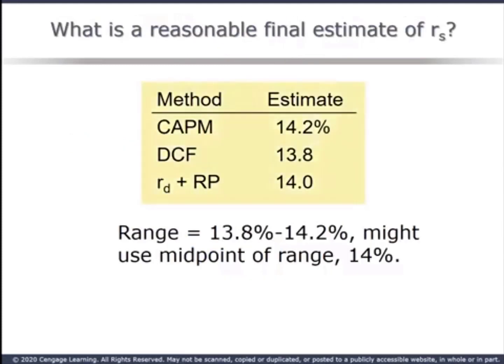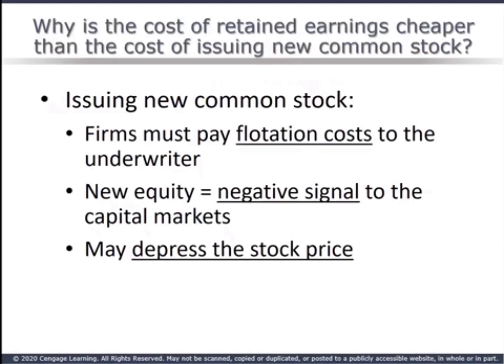So here are our three estimates. We might justify using the midpoint of 14%, or if we felt strongly about the quality of one estimate over another, we could elect to use it. The cost of issuing new common stock is greater than the cost of retained earnings. Issuing securities involves flotation costs — the cost of underwriting, legal fees, etc.